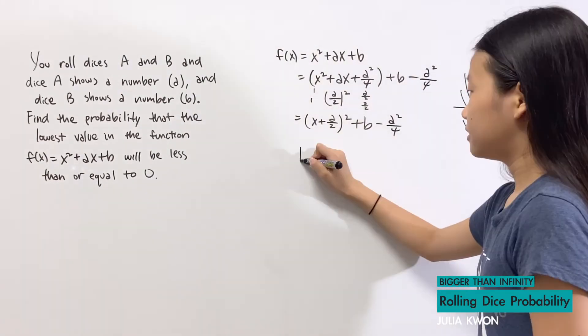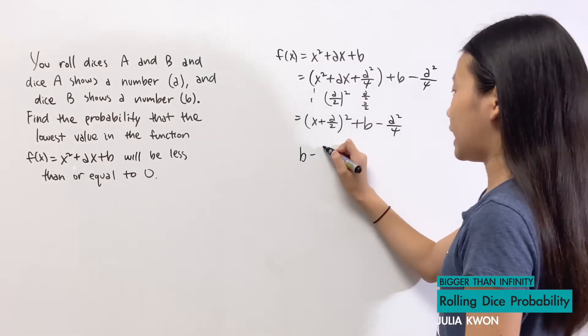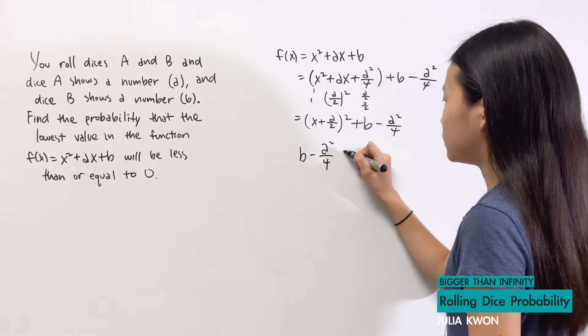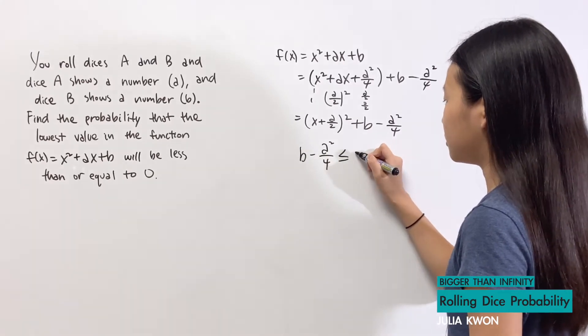So we're going to write down b - a²/4, which is less than or equal to 0.